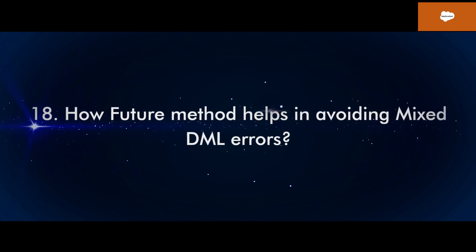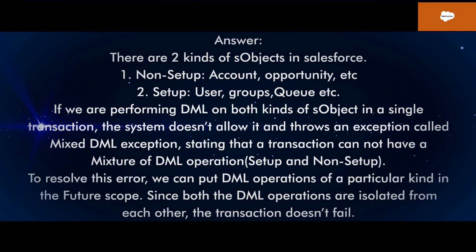Q18: How does a future method help in avoiding mixed DML errors? There are two kinds of sObjects in Salesforce: Non-setup (Account, Opportunity, etc.) and Setup (User, Groups, Queue, etc.). If we are performing DML on both kinds of sObjects in a single transaction, the system throws a mixed DML exception, stating that a transaction cannot have a mixture of DML operations on setup and non-setup objects. To resolve this, we can put DML operations of a particular kind in future scope. Since both DML operations are isolated from each other, the transaction doesn't fail.